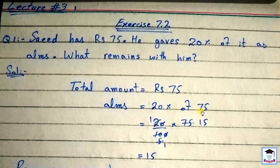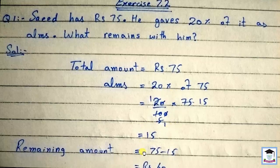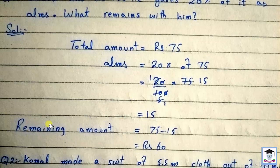20% of 75 - just like in 7.1, multiply 20 by 75 and divide by 100. This gives us 15. So the remaining amount is 75 minus 15, which equals 60 rupees.